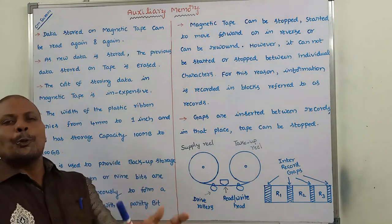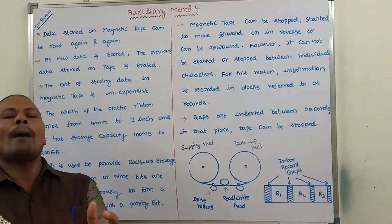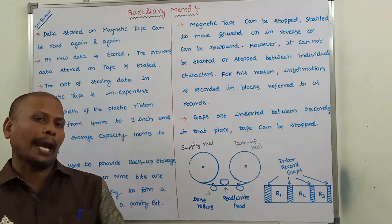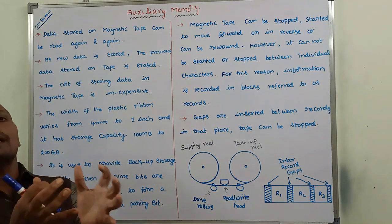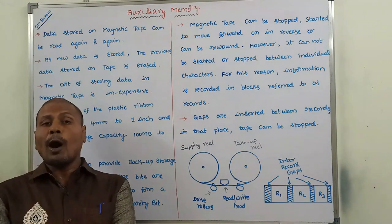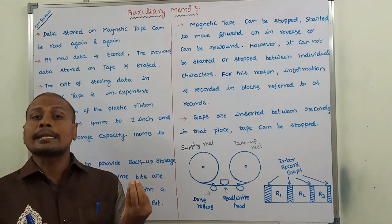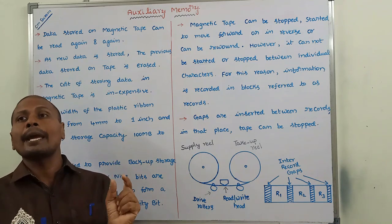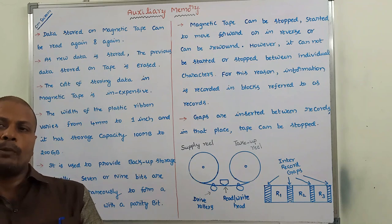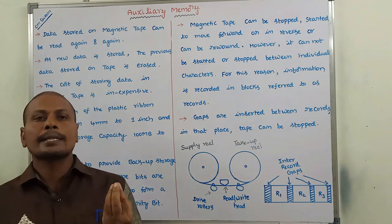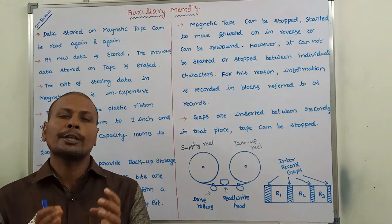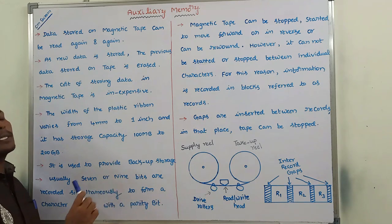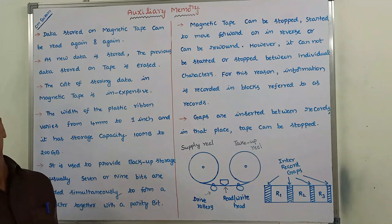The information stored in the magnetic tape is in the form of bits. The collection of bits forms one character. Usually 7 or 9 bits are recorded simultaneously to form a character together with a parity bit. The parity bit is used for error detection purpose.